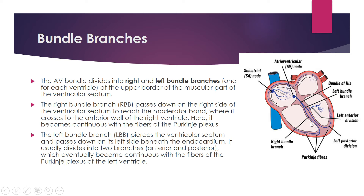The fourth part of the conducting system is the bundle branches. The bundle of His gives two types of branches: the right bundle branch (RBB) on the right side and the left bundle branch on the left side, one for each ventricle. They are present at the upper border of the muscular part of the ventricular septum. The right and left bundle branches are thus located in the muscular part of the interventricular septum.